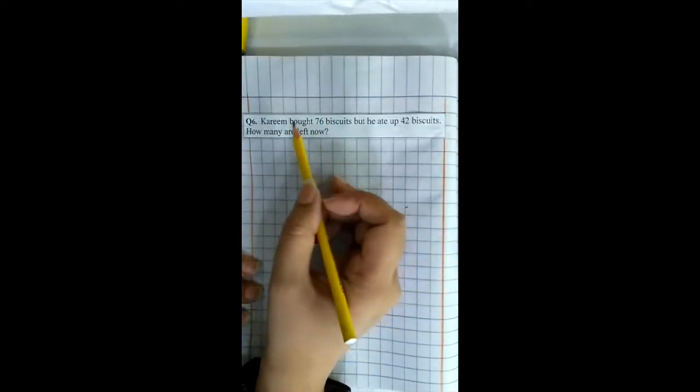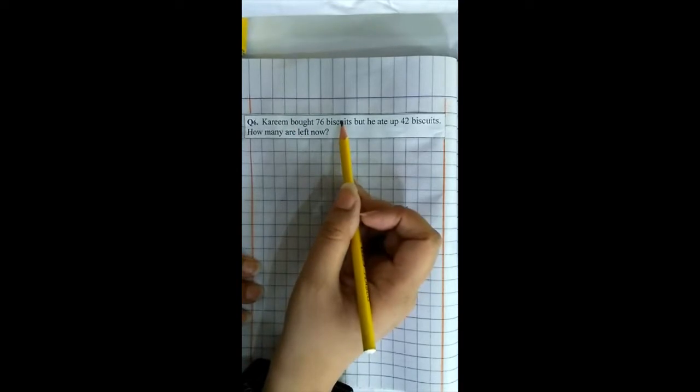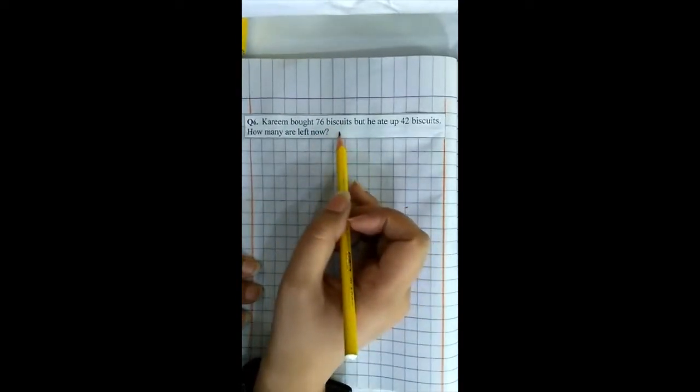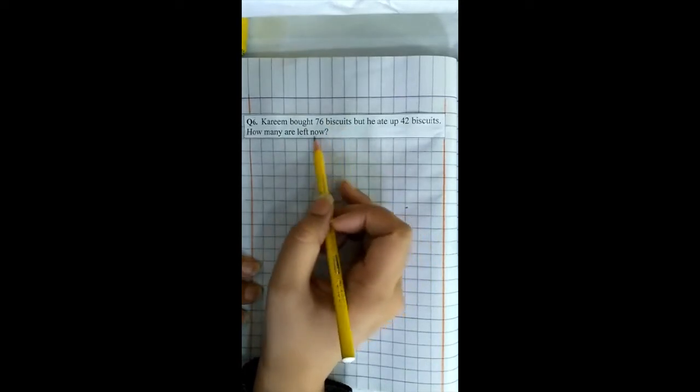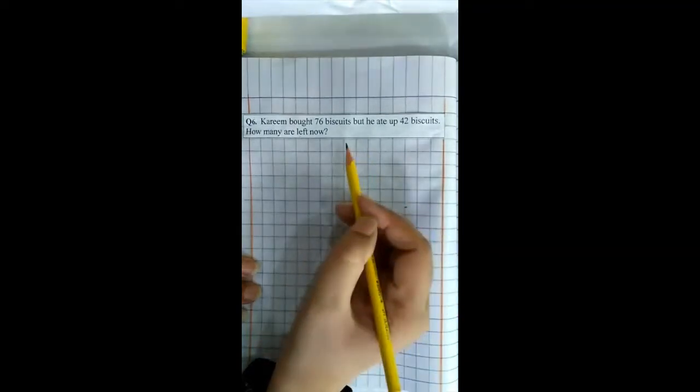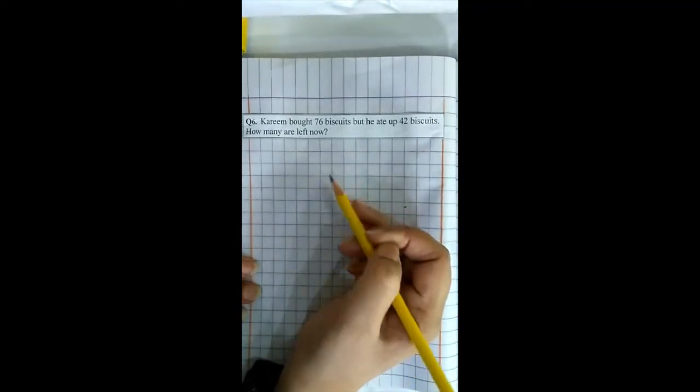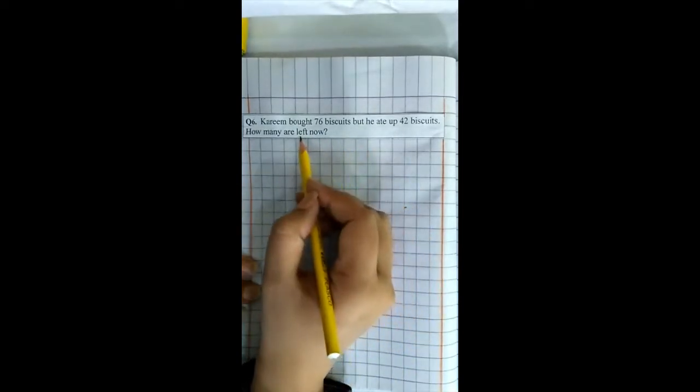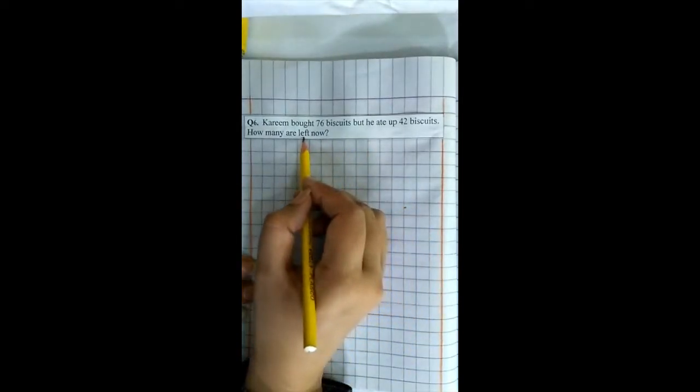Now look at this question. Do you find clue word in this question one class? کیا آپ اس میں clue word دیکھ سکتے ہیں؟ Like جیسے remaining ہوتا ہے, all together ہوتا ہے, sum of, difference of, left ہوتا ہے. تو اس میں کیا ہے؟ Left ہے. Left ہم کریں گے، یعنی ہم minus کریں گے.